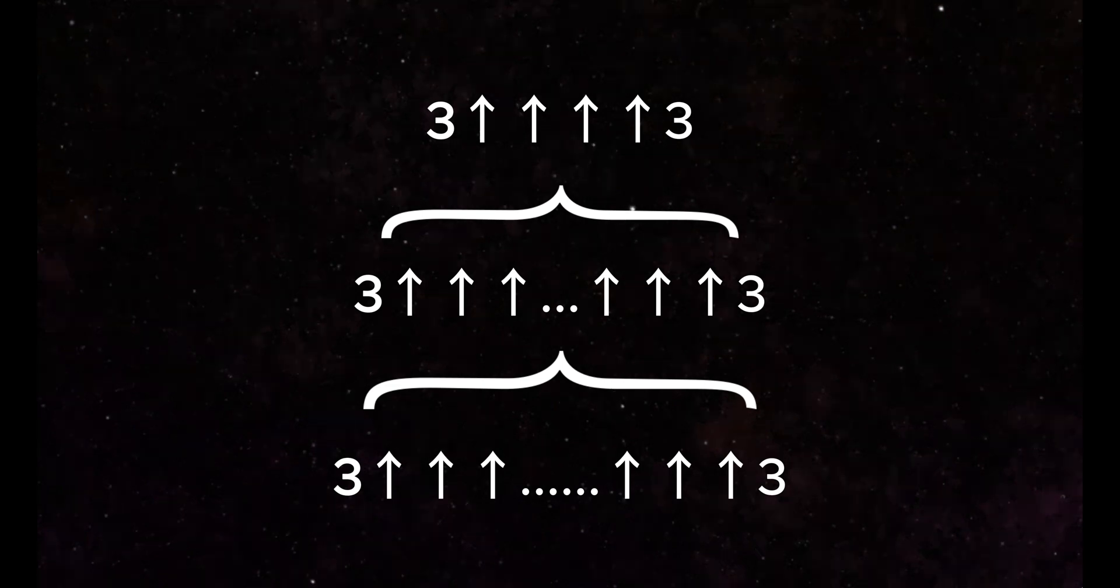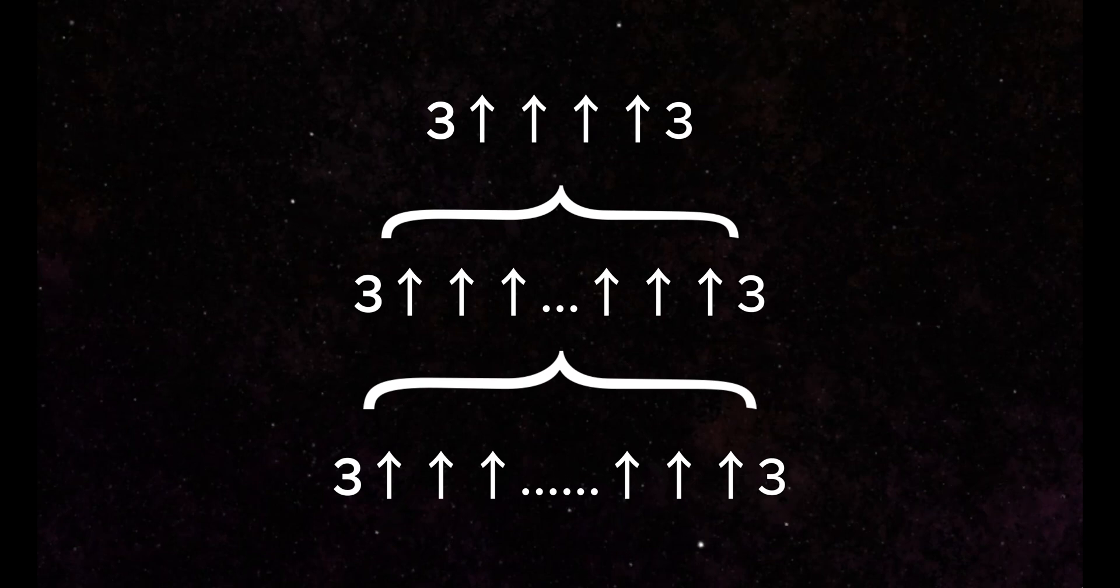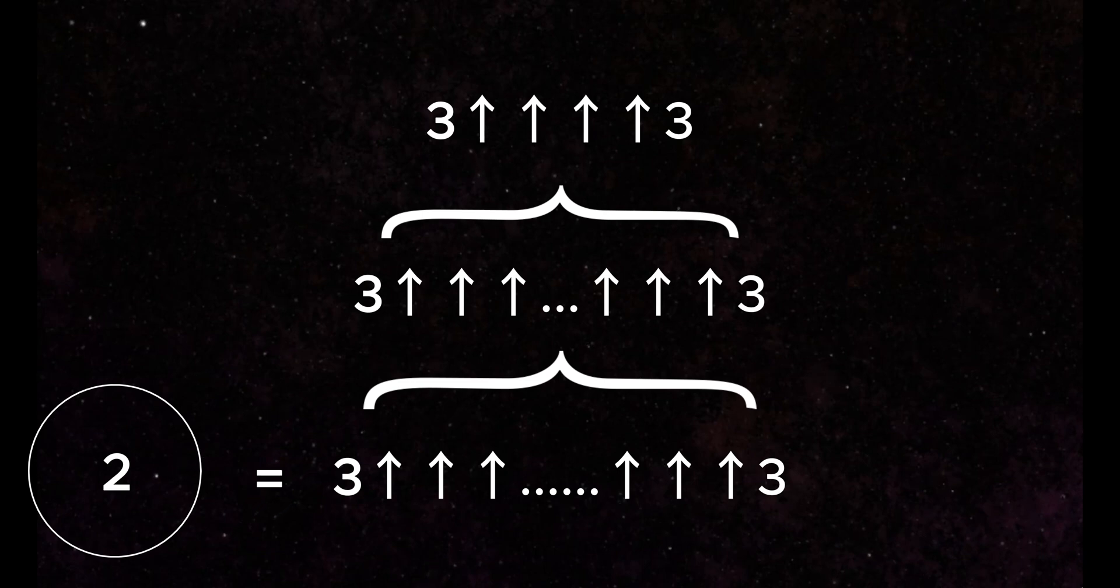This tremendously large number is now used to describe the number of arrows on this number, making this so explosively large that our universe would not be able to contain the number of arrows in this notation. This is Moser's number.